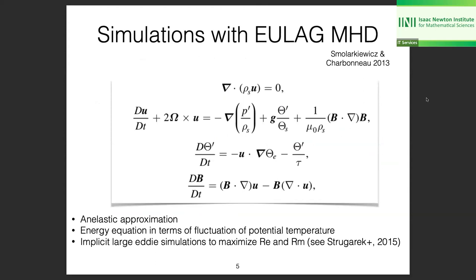All simulations are performed with the Eulerian MHD code using the anelastic approximation — yesterday we talked about the difference between DNS and the anelastic approximation. We use a potential temperature for the energy equation, with perturbations on a background profile. These are implicit large-eddy simulations aimed at maximizing Reynolds numbers, though with no physical dissipation in the code the Reynolds number cannot be easily evaluated — one limitation of ideal MHD codes.